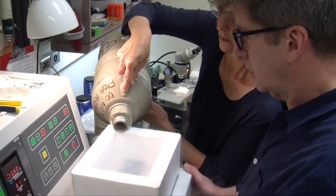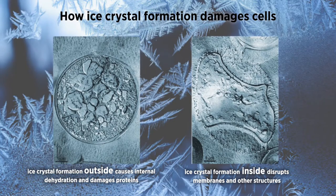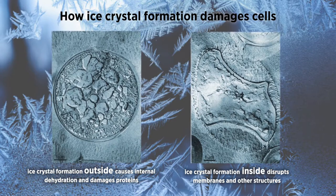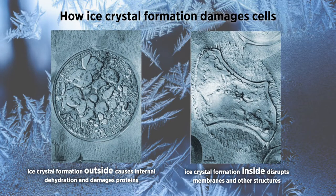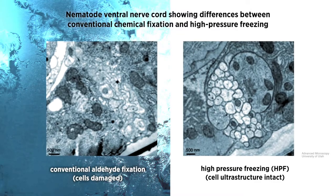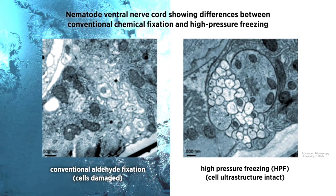And then the crystals will destroy the internal structure of the cell, so there will be different places where the cell looks like it's ripped out where a crystal has formed. So if we can do high-pressure freezing, we can get around this problem.